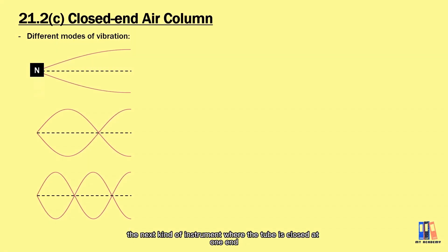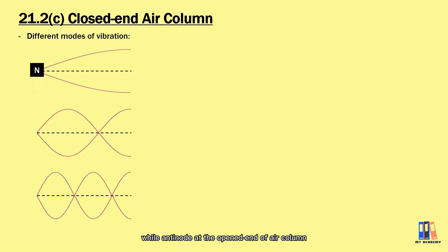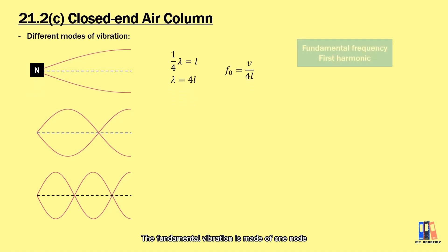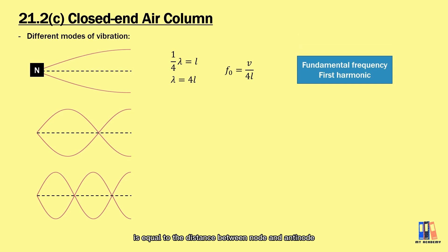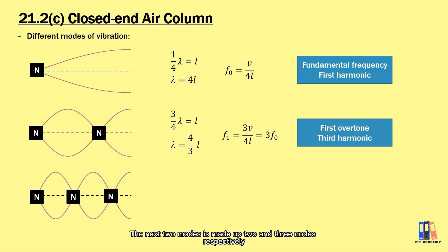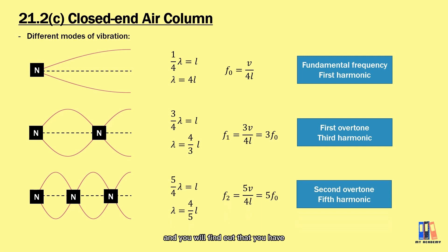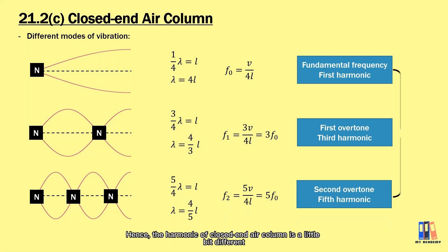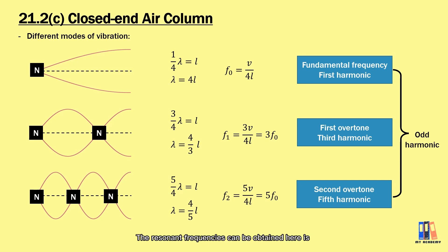Now let's look at the next kind of instrument where the tube is closed at one end while the other end is open. We have a node at the closed end and an antinode at the open end. The fundamental vibration has one node, where the length of the air column equals the distance between a node and antinode, which is one quarter of the wavelength. Applying V = fλ, the fundamental frequency equals the wave speed divided by four times the length of the air column. The next two modes have two and three nodes respectively, giving three times and five times the fundamental frequency for the first and second overtones. Hence, the closed-end air column only produces odd harmonics: f₀, 3f₀, 5f₀, and so on.